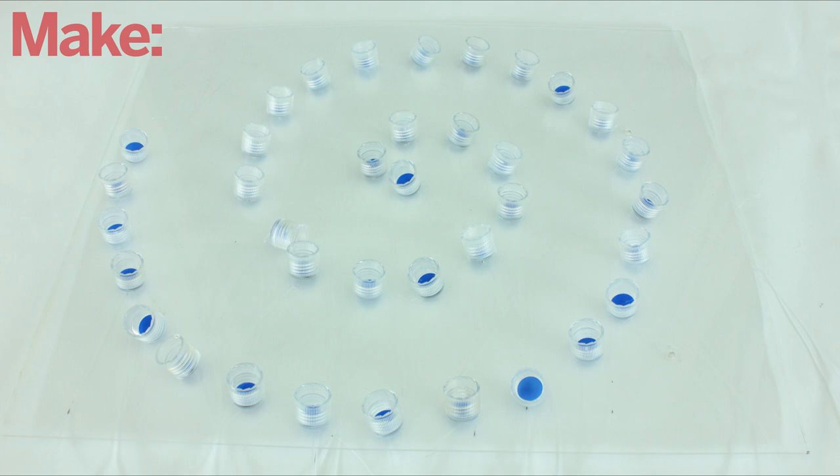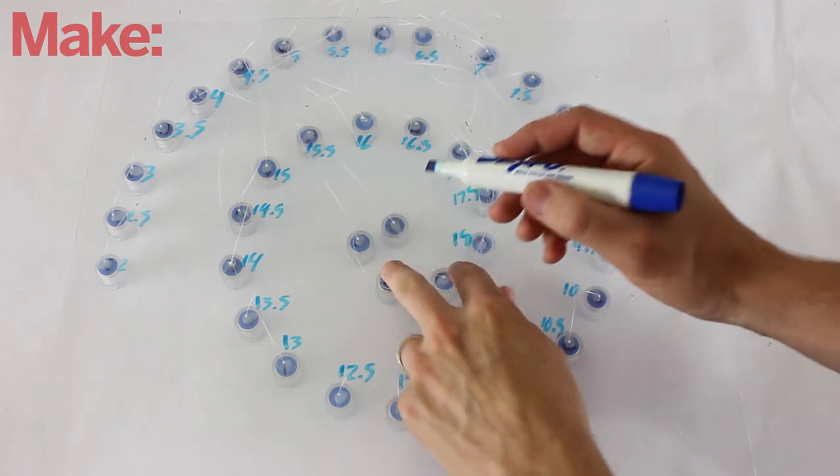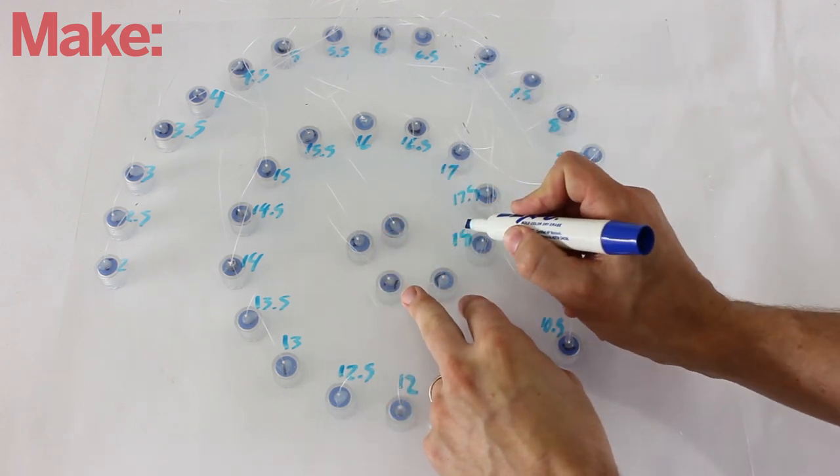Then feed each piece of fishing line through one of the holes in the plastic. To make it easier to keep track of how long each hole needs to be, I wrote the lengths next to each hole in dry erase marker.